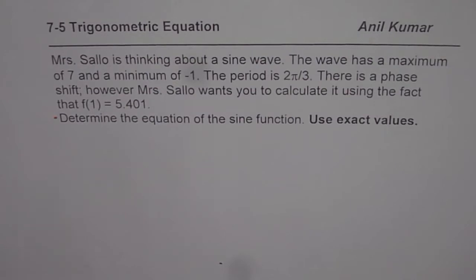Here is the question: Mrs. Sello is thinking about a sine wave. The wave has a maximum of 7 and a minimum of minus 1. The period is 2π/3. There is a phase shift, however Mrs. Sello wants you to calculate it using the fact that f(1) = 5.401. Now, determine the equation of the sine wave, use exact values.